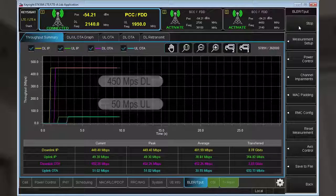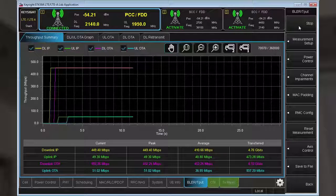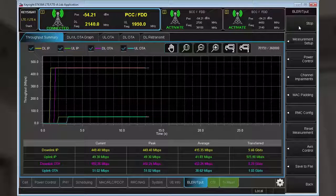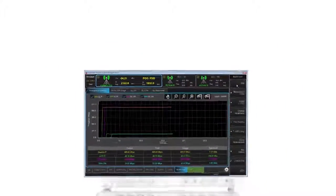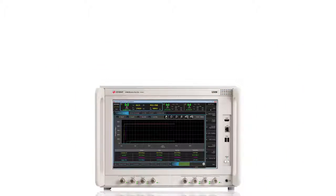In addition to measuring end-to-end data throughput with multiple component carriers, with the UXM's integrated X-Series measurement applications, you can also measure your device's RF performance when transmitting two uplink carriers.